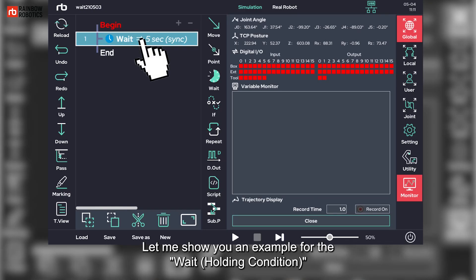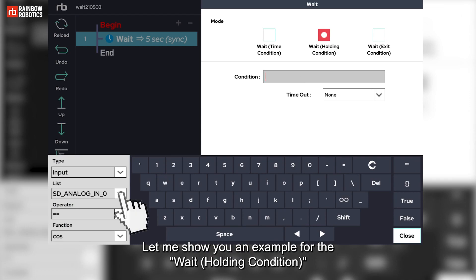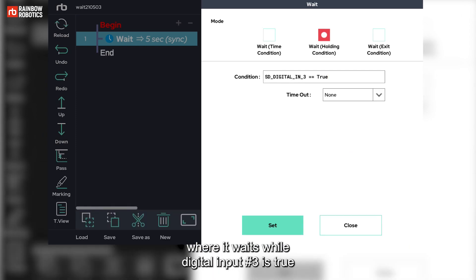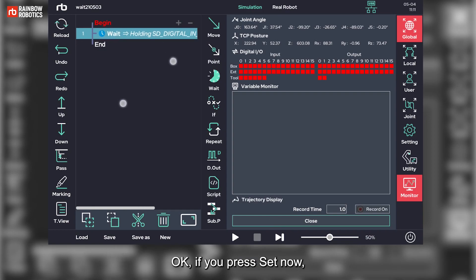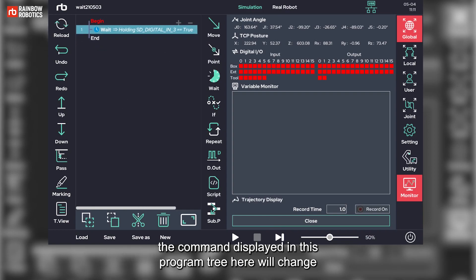Let me show you an example for the wait holding condition, where it waits while digital input number 3 is true. Okay, if you press set now, the command displayed in this program tree here will change.